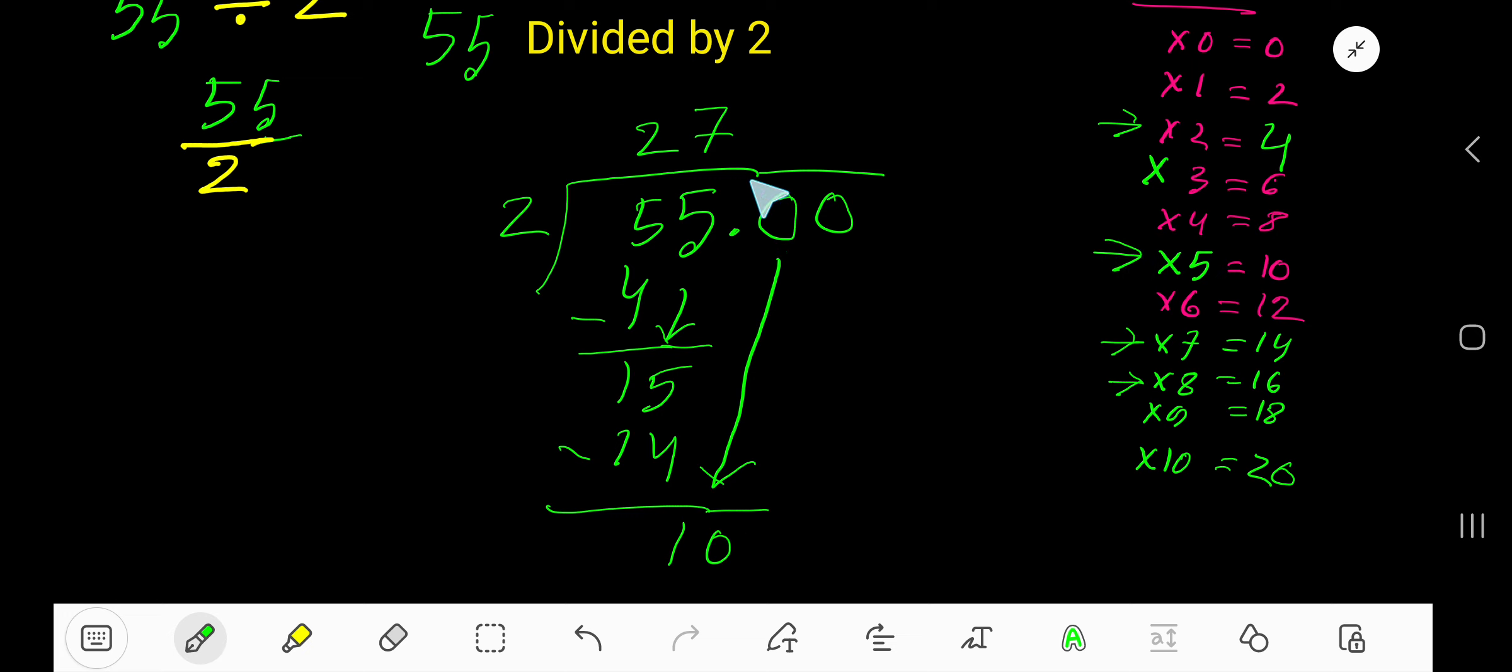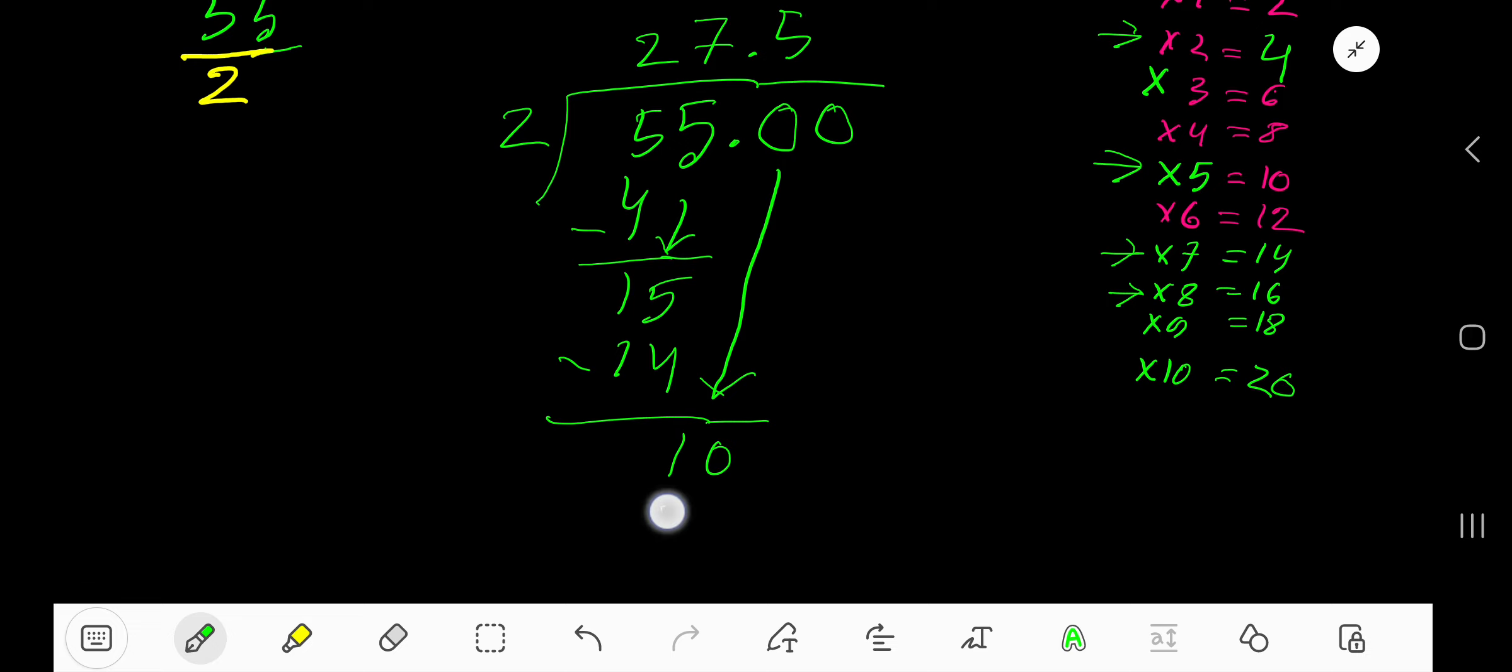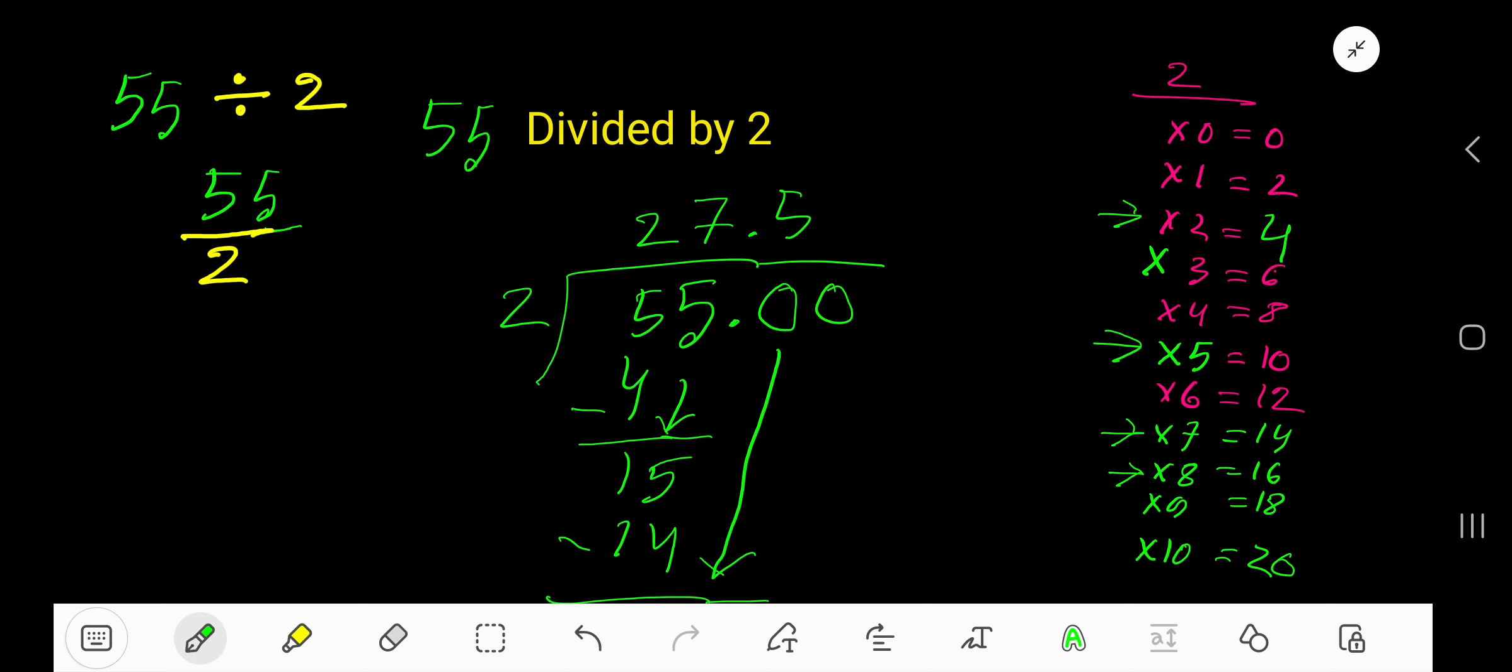Before this 0, there is a decimal. Decimal must come to the quotient directly. 2 goes into 10, 5 times. Write 5 here. 5 times 2 is 10. Then subtract 0. That is 27.5 is your answer.